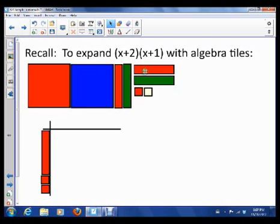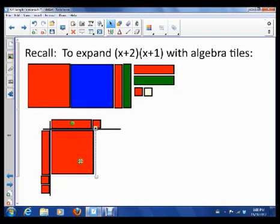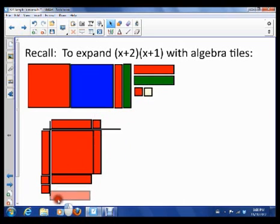And then x plus 1, we can set up on the top. So there's x plus 1, and then our answer is going to be whatever gets made in the center here. So there's x squared, plus an x, plus two more x's, and then plus 2. So that's how we filled in the blocks there.